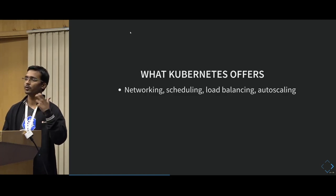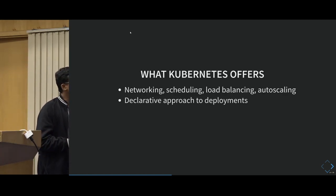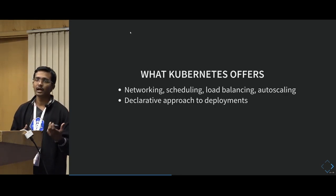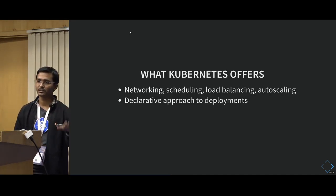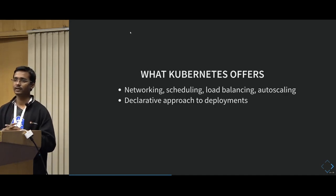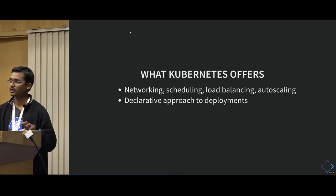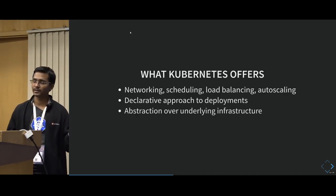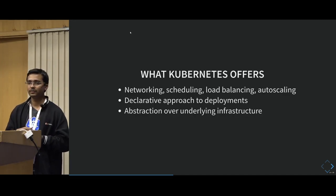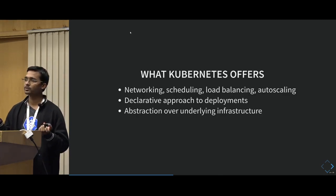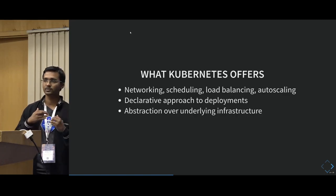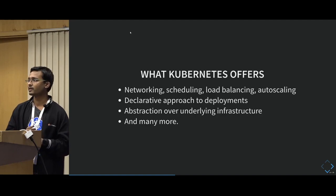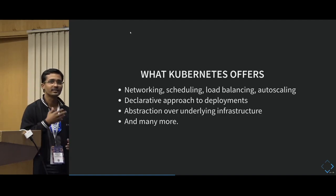Kubernetes follows a declarative approach. You say you want your application to run with five replicas and this configuration, and you post that configuration to the Kubernetes API. From there it takes care of deploying, managing, and maintaining those replicas. That is how abstraction is added over the underlying infrastructure. Even if your underlying nodes are VMs, those will be kept running as-is, and on top of those VMs your applications will run. There are also a lot of new things happening in this ecosystem, like Vitess and many other tools.